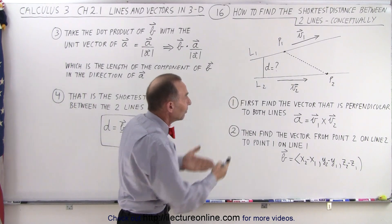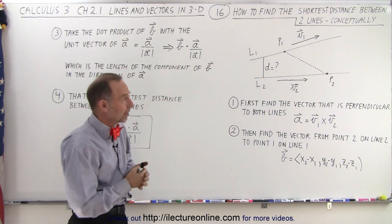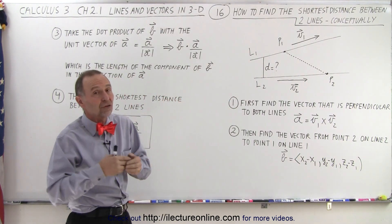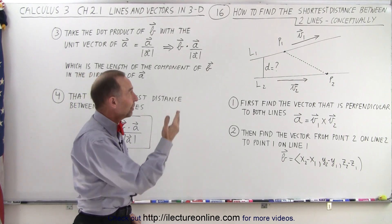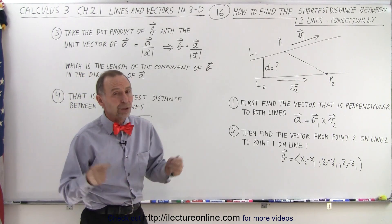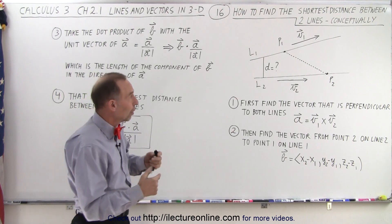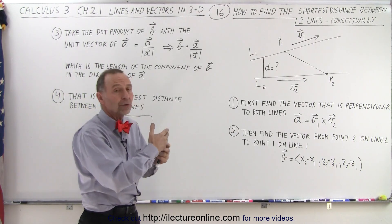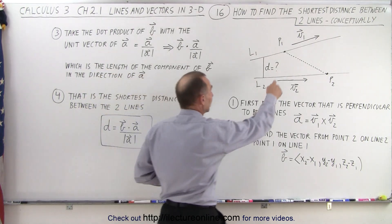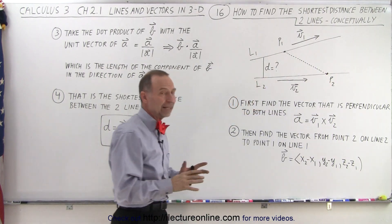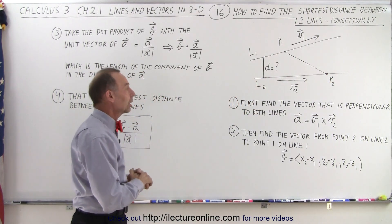So let's say we have two lines, and they are not parallel. Each of the two lines does have a parallel vector, V1 and V2, and we do need to know a point on both of the lines. So we need to know a point on line one, and we need to know a point on line two. That is absolutely required.